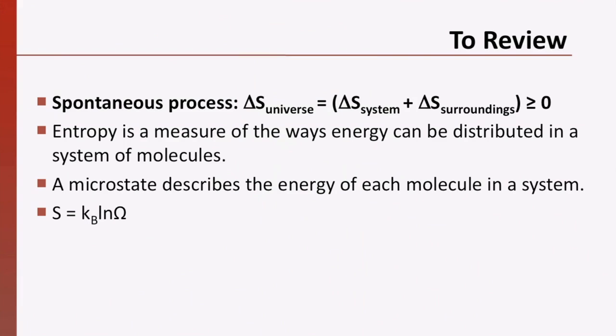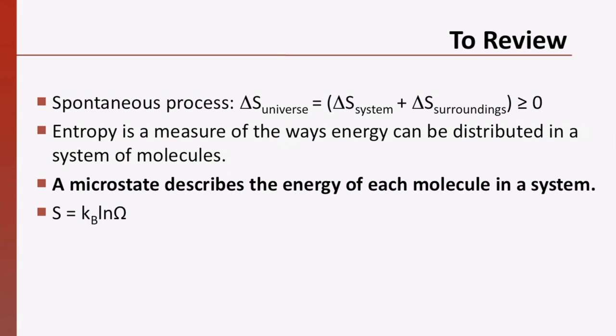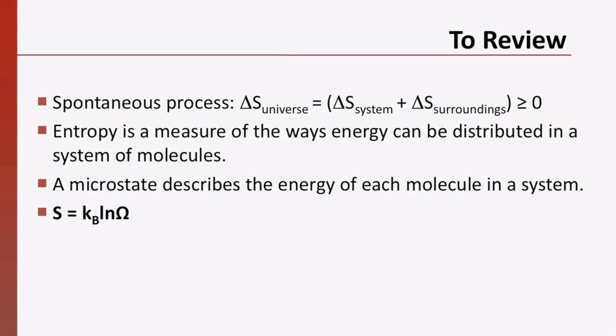To review, for a process to proceed spontaneously, the total entropy change for a system and its surroundings must be positive. Entropy measures the number of possible ways energy can be distributed in a system of molecules. A microstate is an instantaneous catalog that describes the energy of each molecule in a system. Because molecules are constantly interacting and exchanging energy, this description constantly needs to be revised. A large system has a large number of possible microstates. As we saw with the Boltzmann equation, entropy is proportional to the number of microstates. I hope that this video has helped you to better understand the concepts of entropy. Thank you for watching today, and best of luck for your future studies.